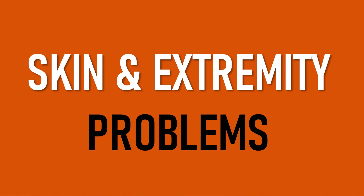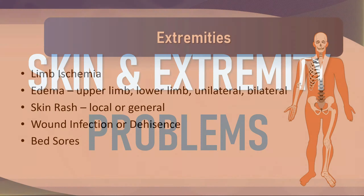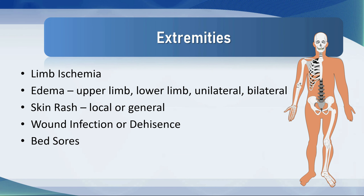Skin and extremity problems. In the extremities, we look for things like limb ischemia, edema — upper limb, lower limb, unilateral, bilateral — a skin rash which may be local or general, a wound infection or wound dehiscence, bed sores. These are all things that need to be listed.